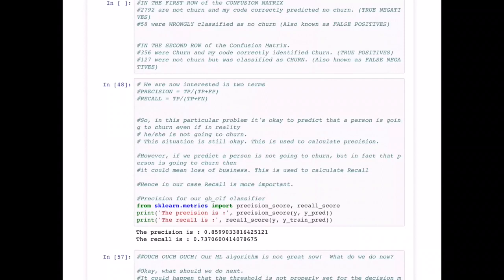In this particular problem, it is okay to predict that a person is going to churn even if in reality he or she is not going to churn. However, if we predict a person is not going to churn, but in fact that person is actually planning to churn, then it could mean loss of business. What you can understand from precision and recall is in this particular context, recall efficiency should be higher because the classifier should have a high recall.